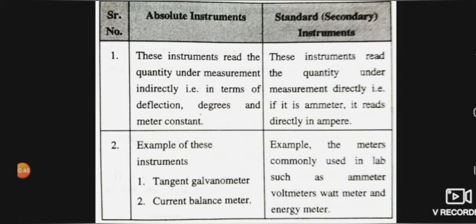Examples of absolute instruments include the tangent galvanometer and current balance meter. Examples of secondary instruments are the meters commonly used in the lab: ammeter, voltmeter, wattmeter, and energy meter — all of these are secondary instruments.